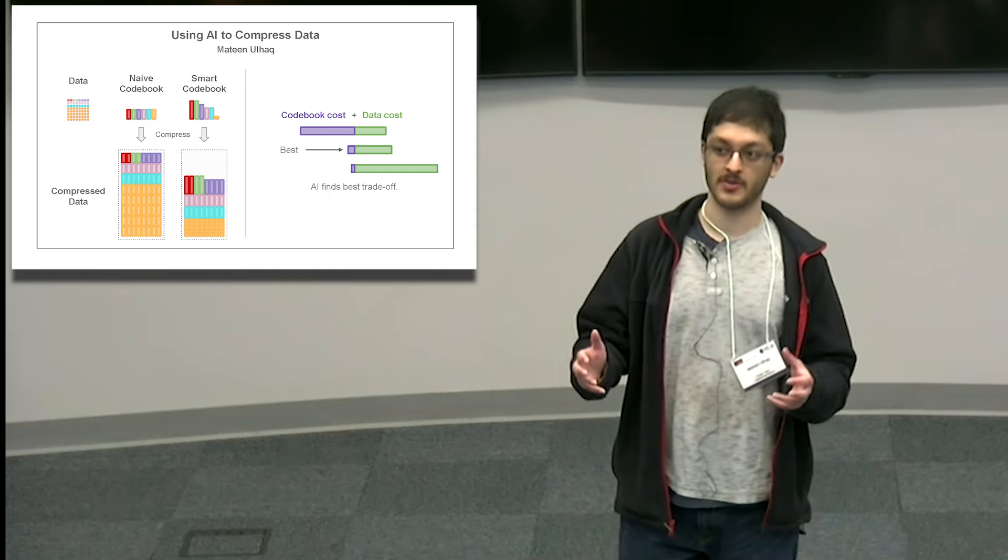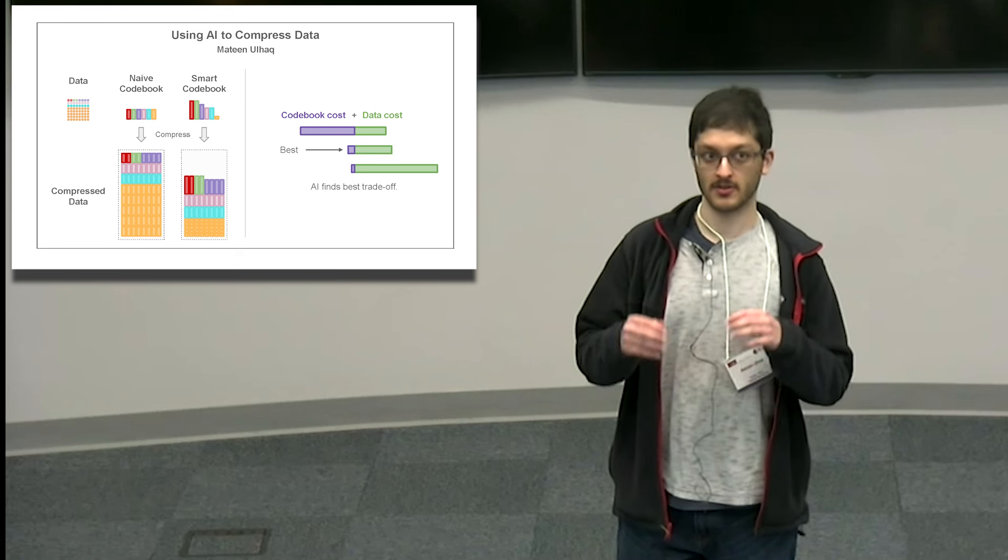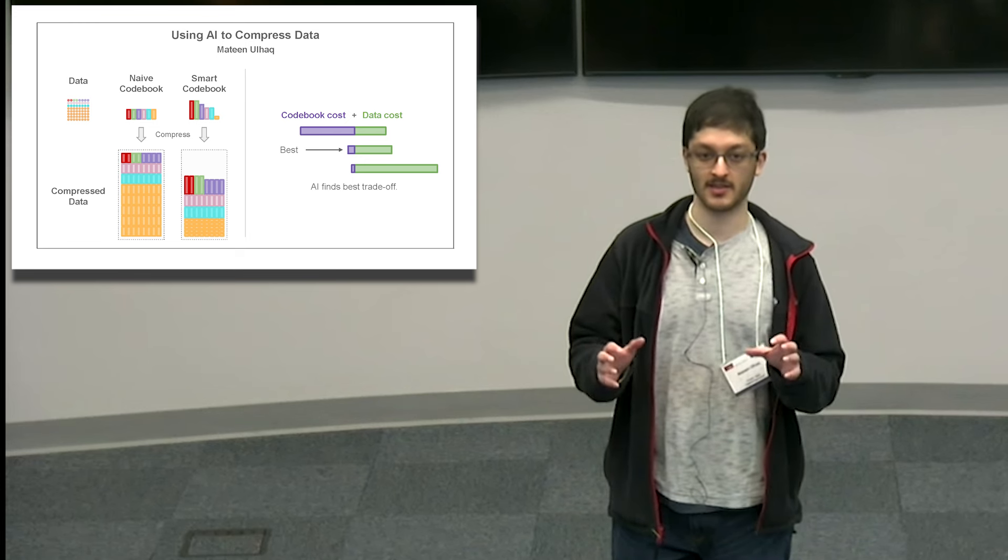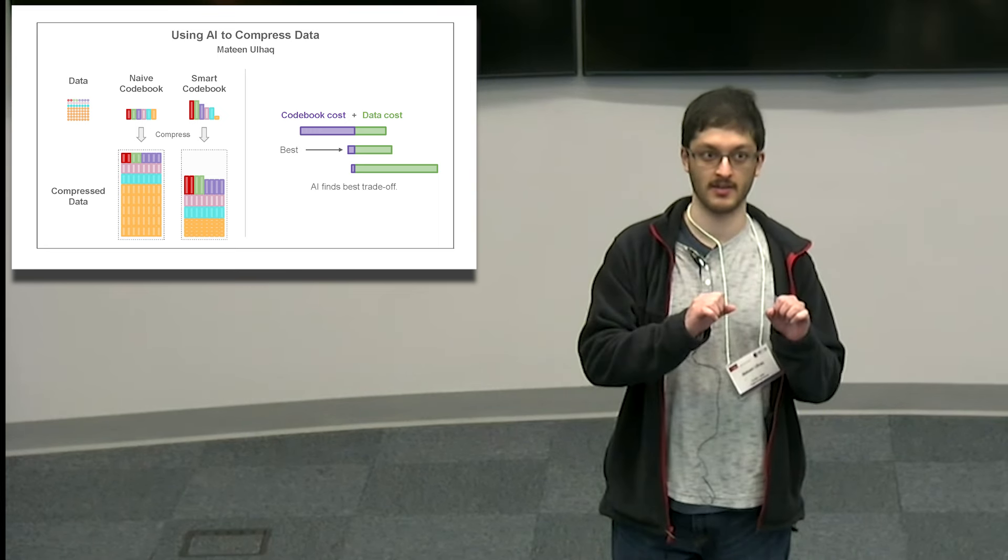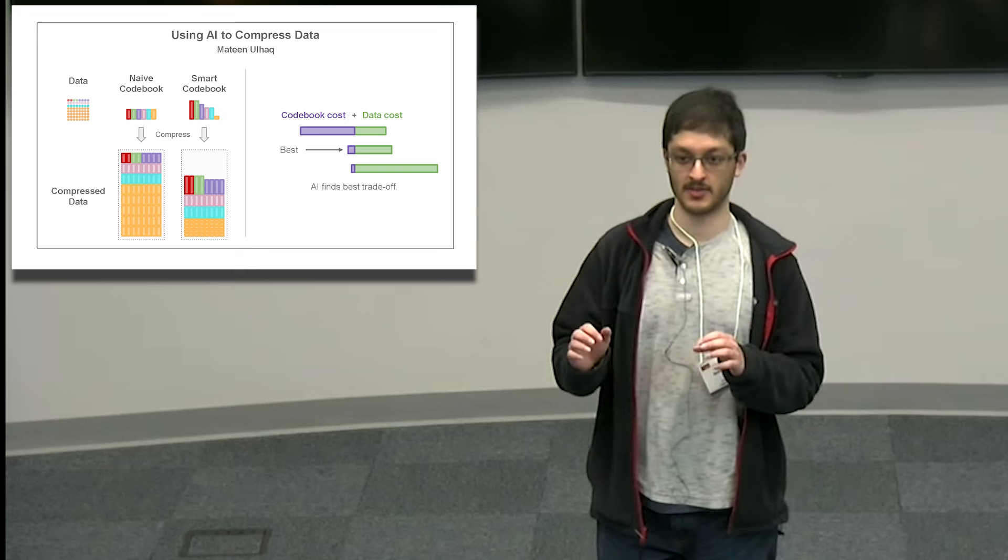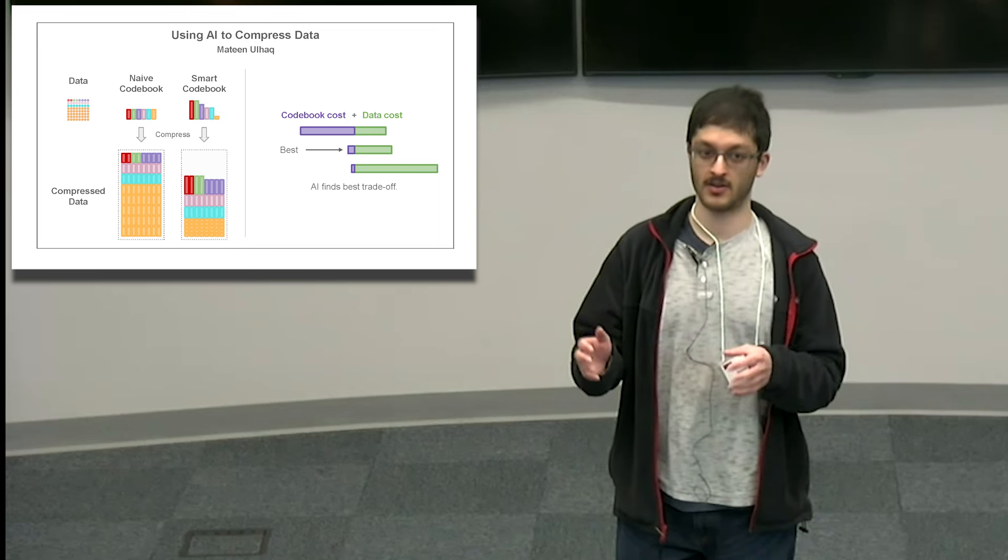Let's think about how we compress data. In order to compress data, we have to look at things that occur more often and represent them in a more compact way. For example, in the English language, some words like 'the' occur very frequently.